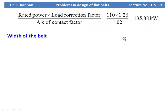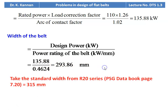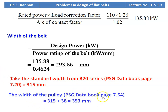Belt width = design power / power rating = 135.88 / 0.4624 = 293.86 mm. From the R20 series (page 7.20), the next higher standard value is 315 mm. Width of pulley from page 7.54: for 315 mm belt width, the pulley width should be 38 mm larger = 315 + 38 = 353 mm.